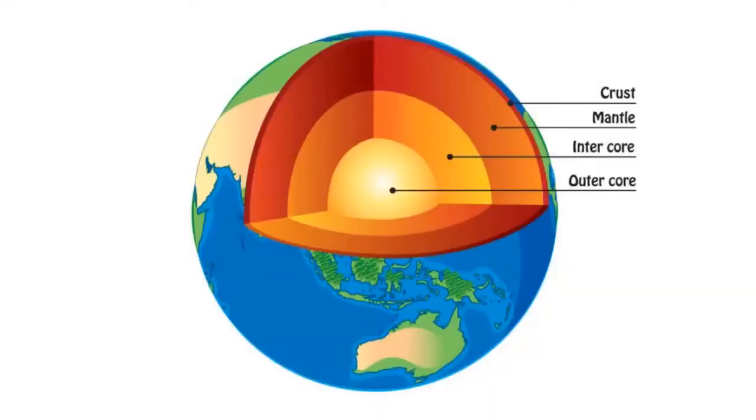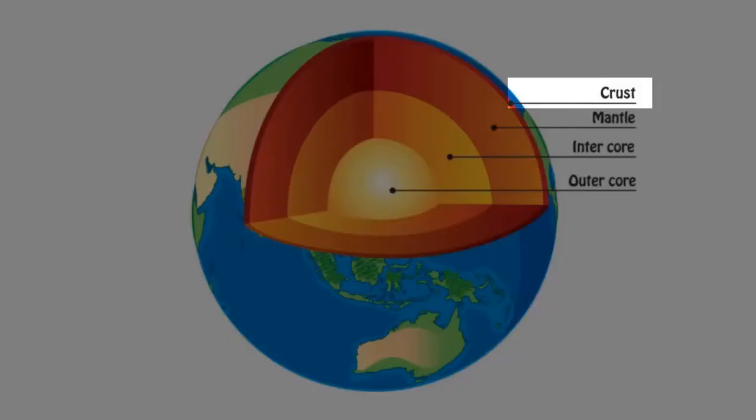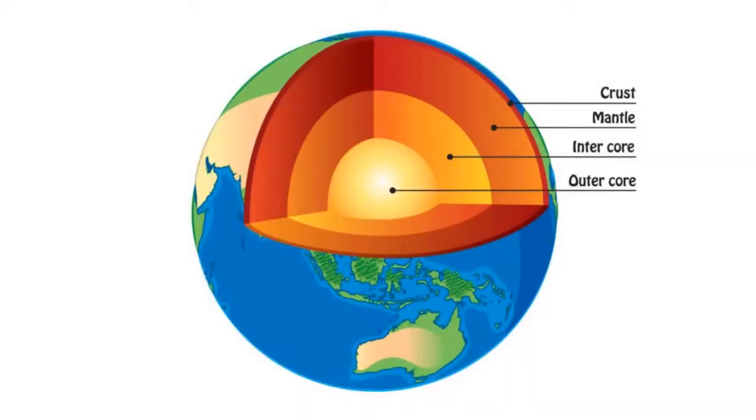Magma — where does it even come from? Well, it comes from melting the lower crust or the upper mantle. Intuitively you just think that to get magma, molten rock, you just heat up rock. But interestingly, our geothermal gradient — the rate at which temperature increases with depth — is about 25 degrees per kilometer. This isn't actually enough to melt rock without something else happening.